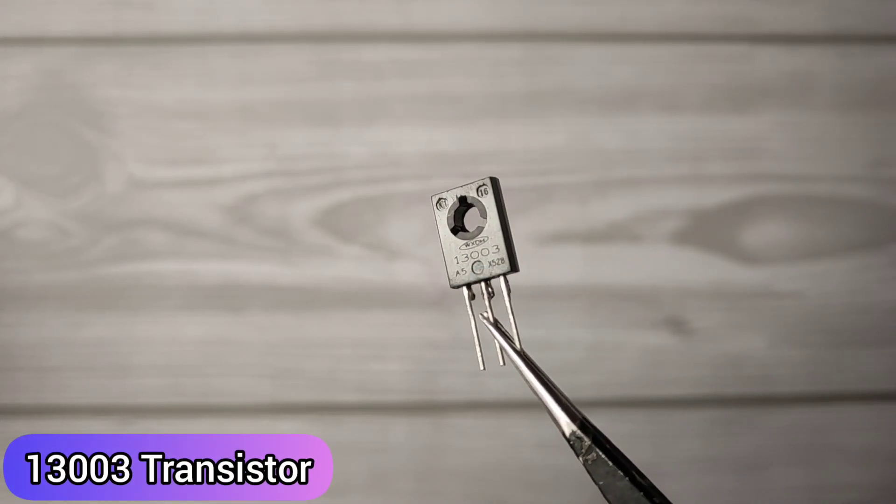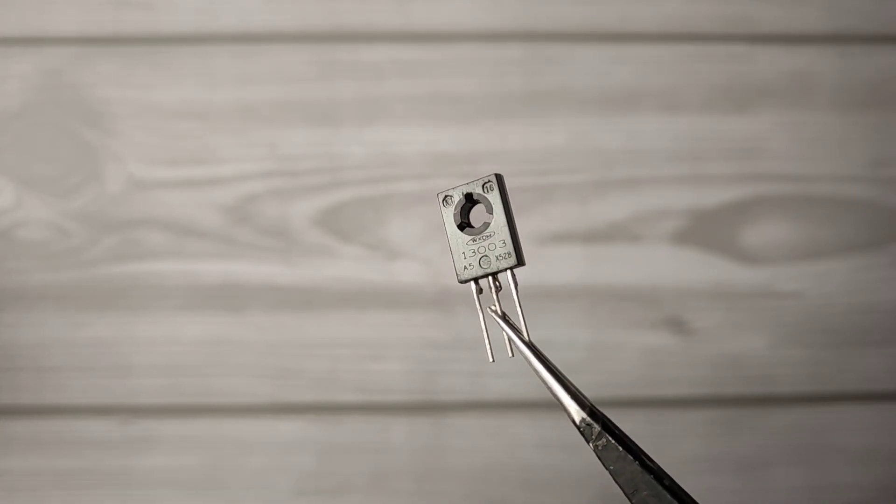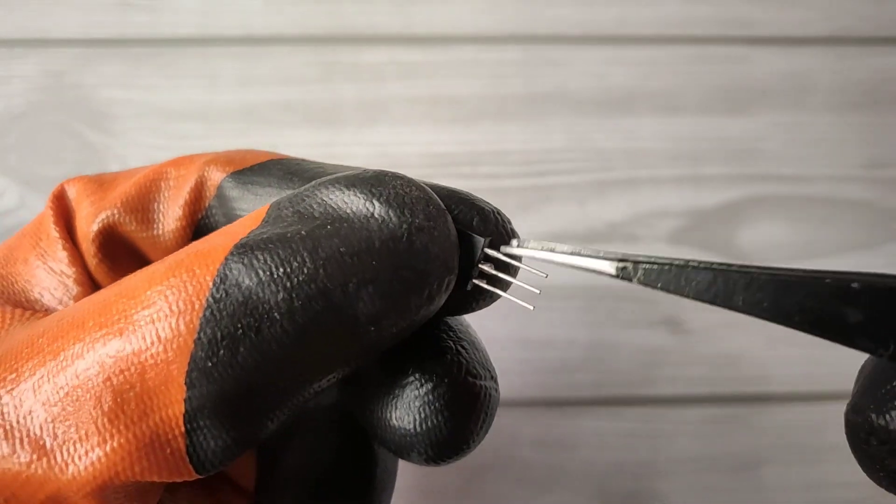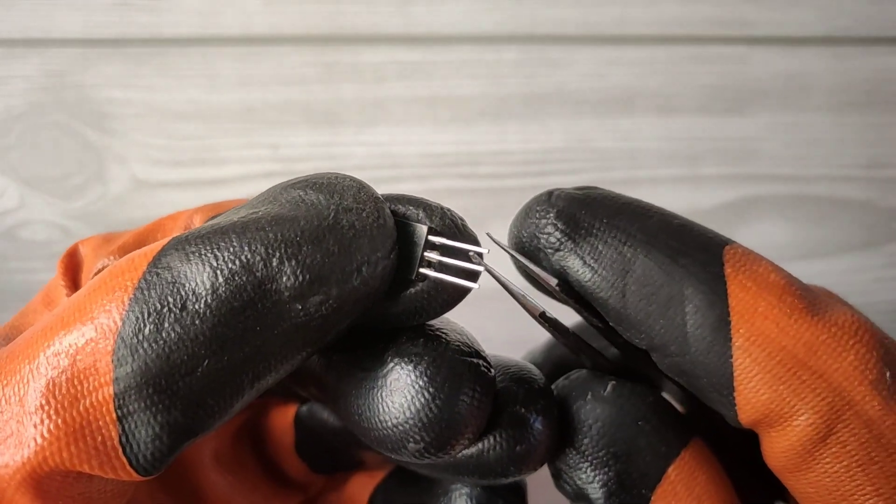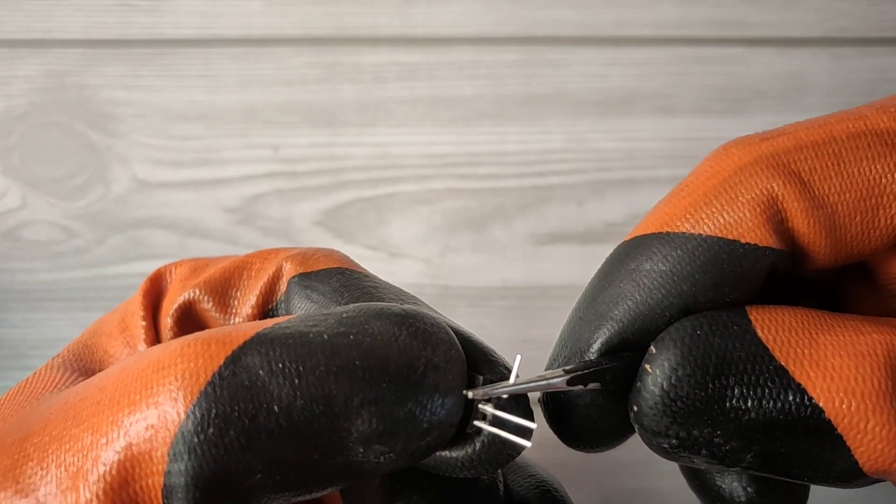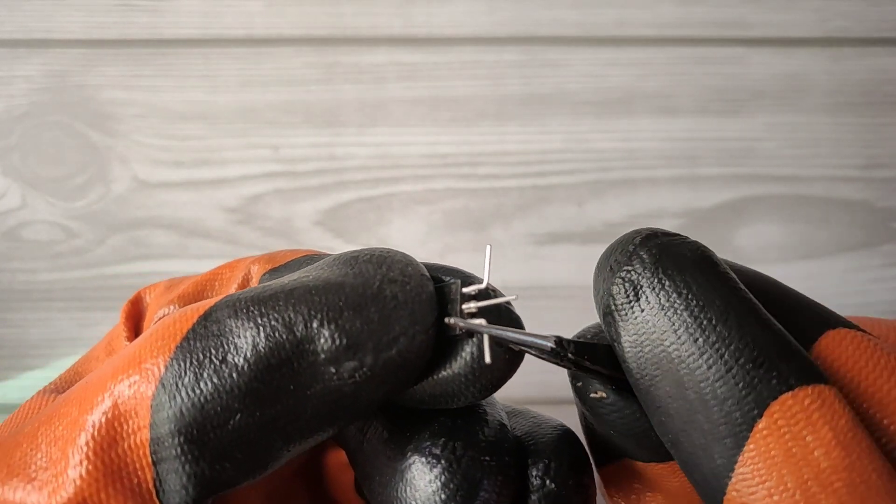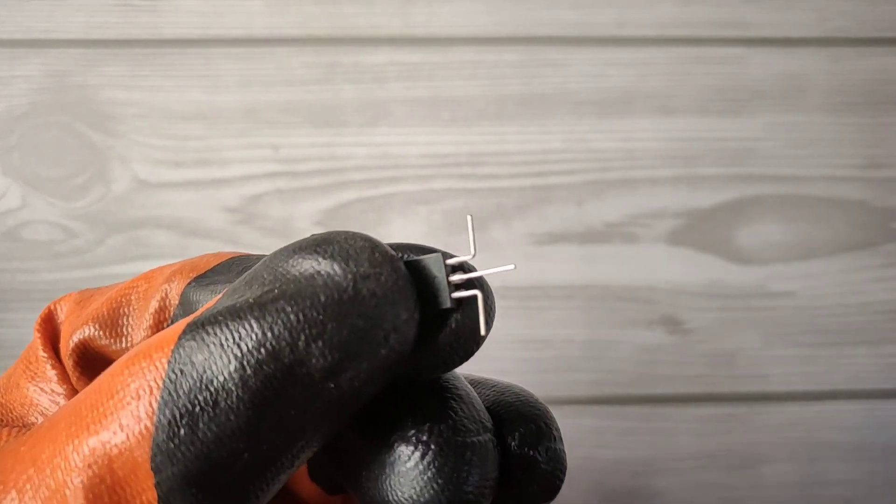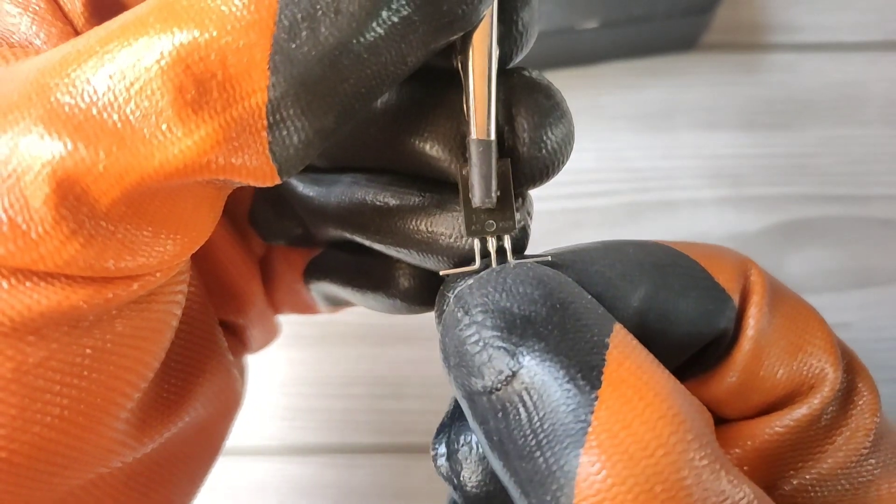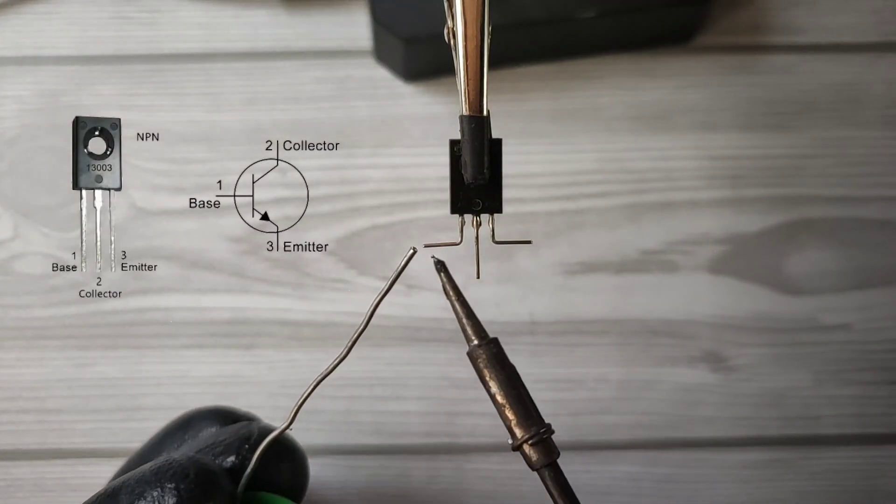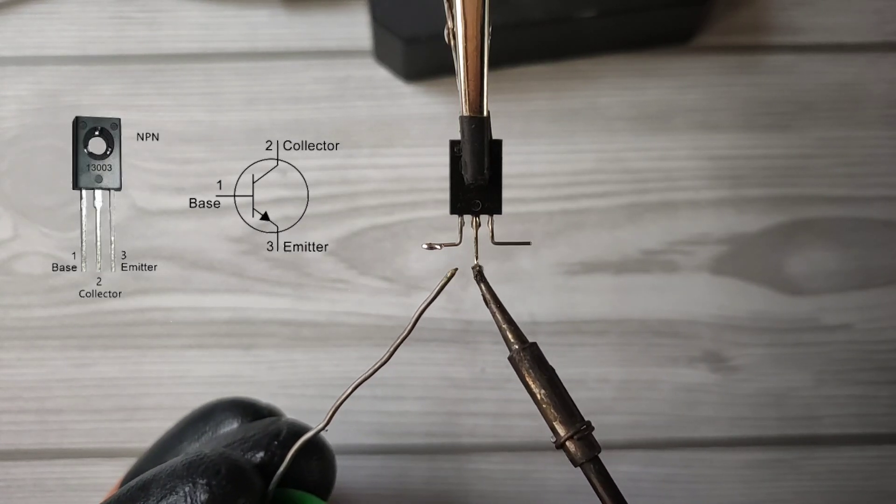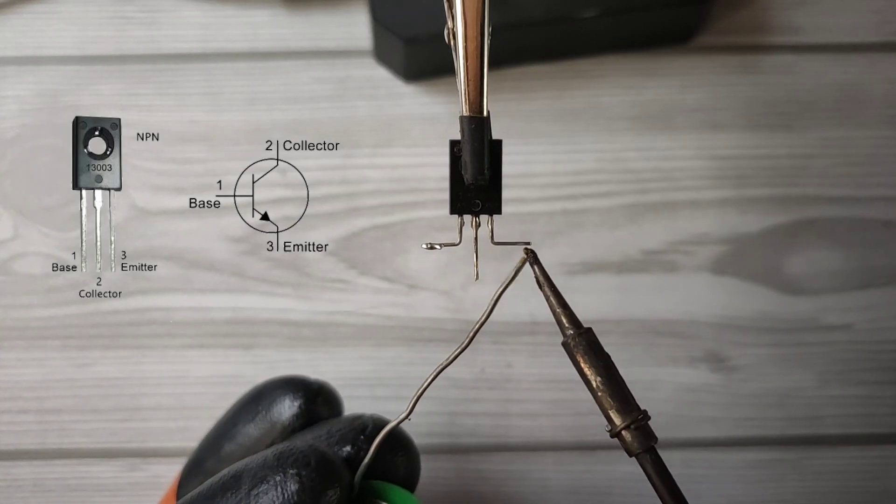For that we need a 13003 transistor. We need to bend the legs of the transistor like this. Pin 1 is base, pin 2 is collector, and pin 3 is emitter.